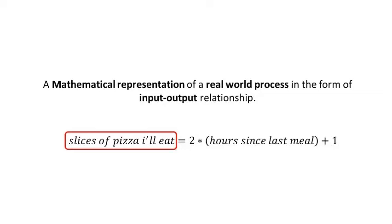Something like this: slices of pizza I'll eat, my output, will be determined by hours since my last meal, which is input. That means if it is two hours since my last meal, I can eat five slices of pizza. Even though it is useless, this is an example of a simple model.